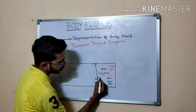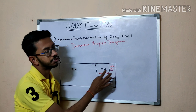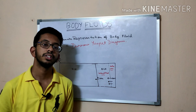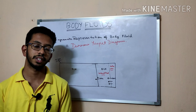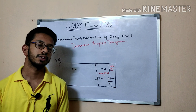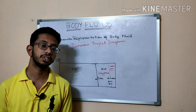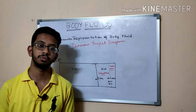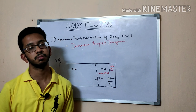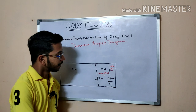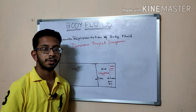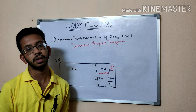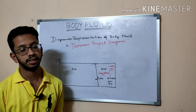This means that if the intravascular concentration of sodium is 145 mmol/L in the blood, the interstitial concentration of sodium will also be 145 mmol/L — the same. The concentration of any ion in the intravascular compartment will be equal to the concentration of that same ion in the interstitial compartment, and that is very important.